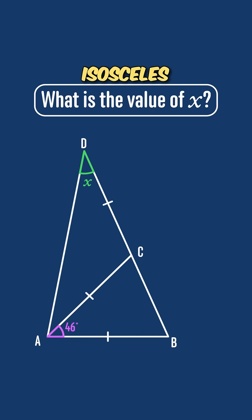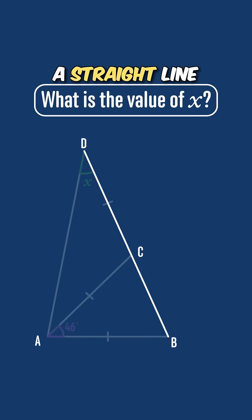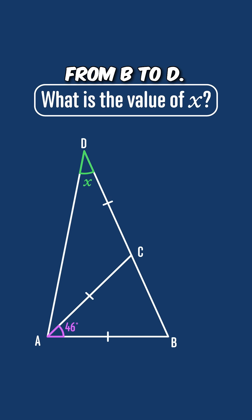Look at this diagram showing two connected isosceles triangles ABC and ACD, and they're connected by a straight line from B to D. Can you find the value of x?